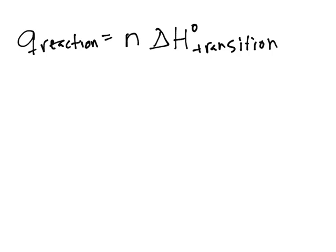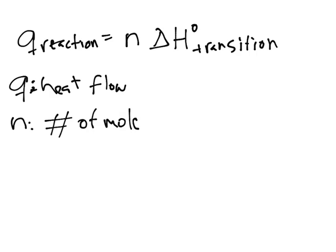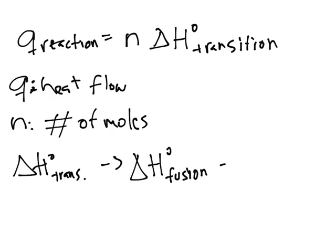Let's identify these: Q is heat flow, or just heat. N is the number of moles, and the delta H transition is the enthalpy of the phase change. It could be, for example, the enthalpy of fusion, the enthalpy of vaporization, or any kind of phase change.